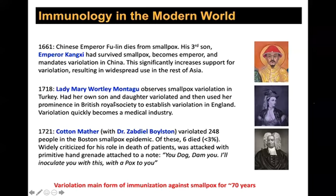Variolation remained the main form of immunization against smallpox for about 70 years. It became not just a minor medical thing — it was widespread, with doctors who specialized in just variolation.